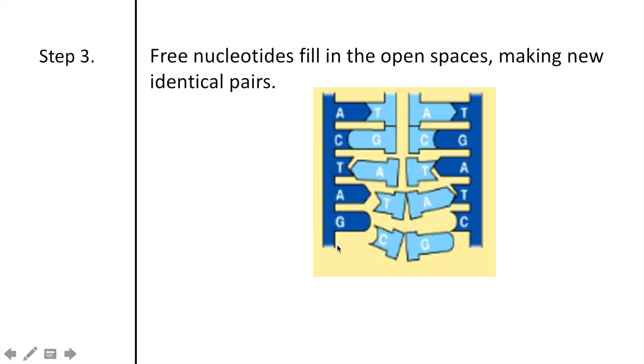In step three, we now have free nucleotides coming in in order to fill in the open spaces. So again, remember, adenine always joins up with thymine, and cytosine always joins up with guanine. So here we have this puzzle piecing going on, and then this is going to create two identical pairs as seen here.